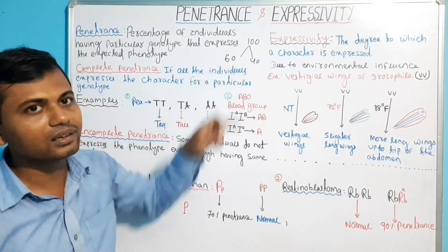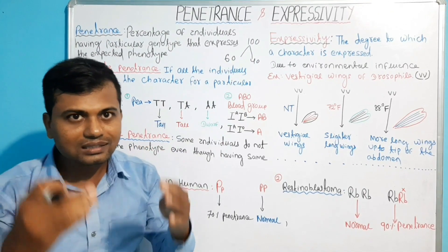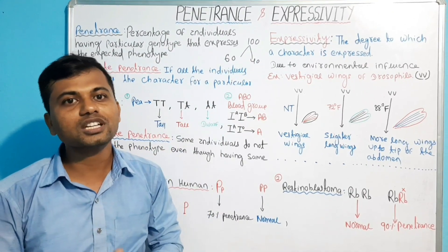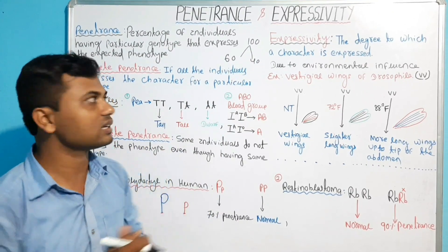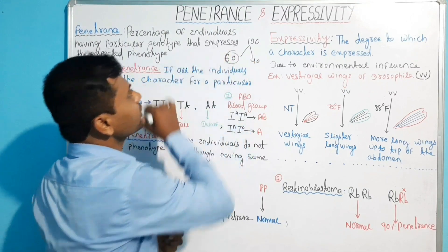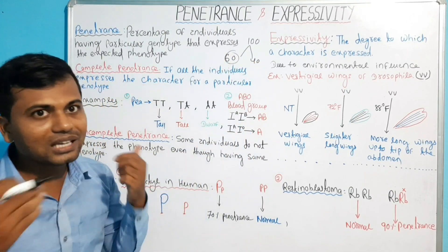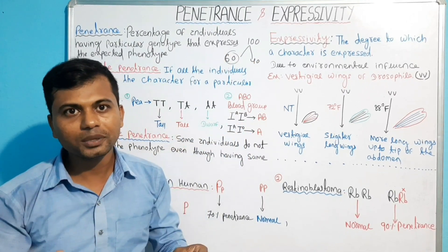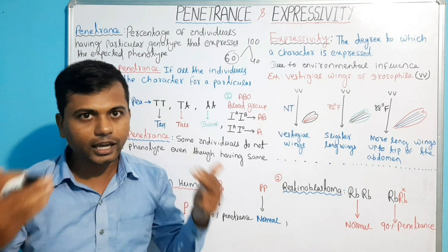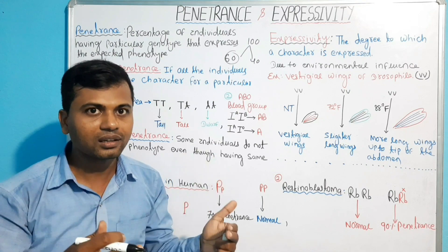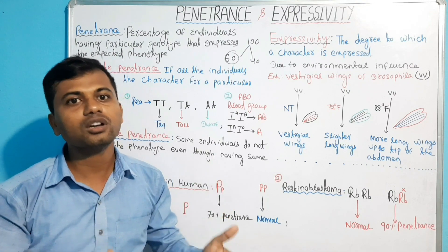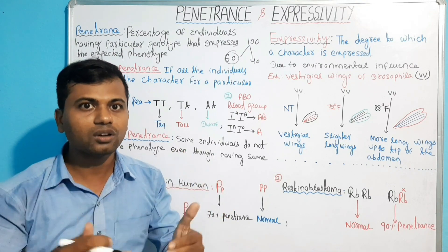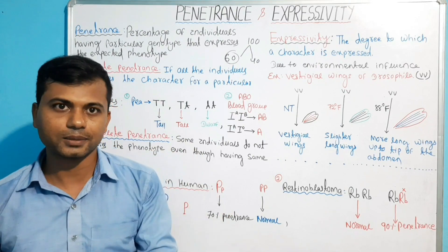In this case, we can say that diabetes is showing 60% penetrance. So, penetrance implies the fraction of individuals having a particular genotype or gene that develop the symptoms, character, or disease.